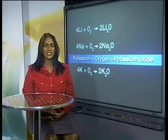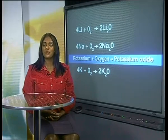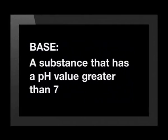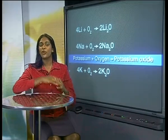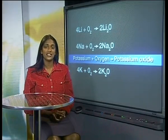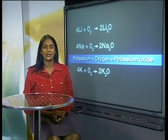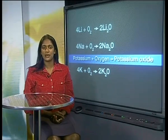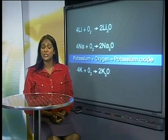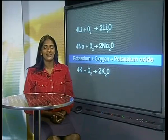Before we start our experiments, I would like to remind you what the terms acid and base mean. An acid is a substance that has a pH value less than 7, while a base is a substance that, on dissolving in water, has a pH value greater than 7. What we need to do is add water to the metal oxides that we've saved from our previous experiments and give the gas jars a good shake. We will then use red litmus paper as an indicator to determine whether the product that forms is an acid or a base. Red litmus paper will turn blue if the solution is a base and remain red if it is an acid.